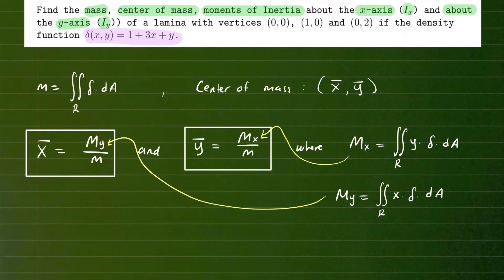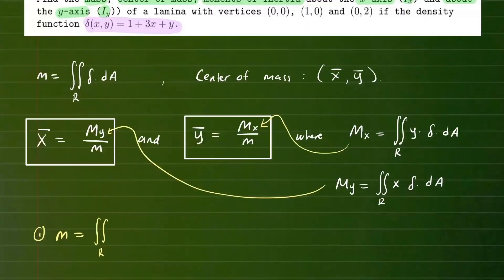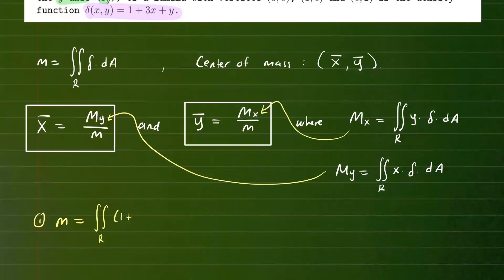Let's go ahead and compute them for this particular problem. My focus for this video is to help you set up the double integral for these components — once you have them, integrating shouldn't be a problem. Let's find the mass first. That's the double integral over the region R of the density function, which is 1 + 3x + y, dA.